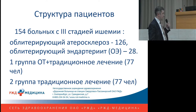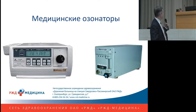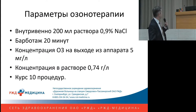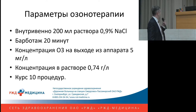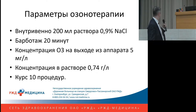The frequency of hospitalization was twice a year. The second group received only traditional treatment. We used Medozone and Gus ozone generators. The ozone therapy parameters are shown in the slide: the course included 10 procedures, with ozone concentration in solution of 0.74 mg/L to 5 mg/L at the output, and 20 minutes was the bubbling time.